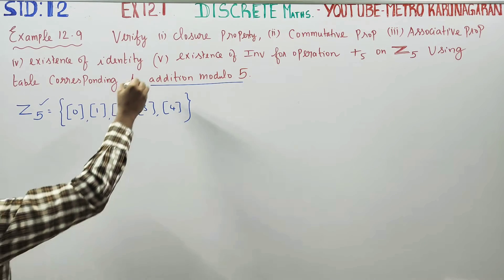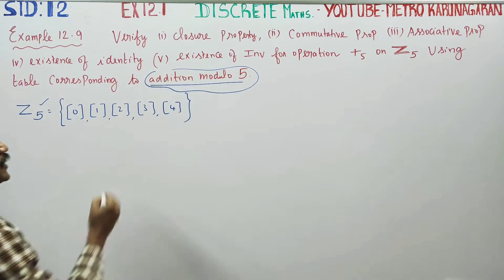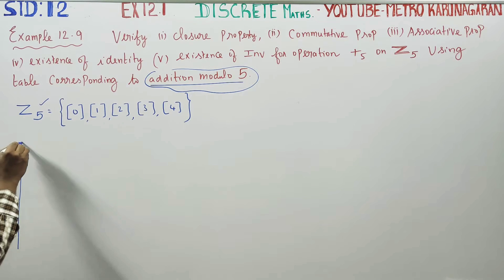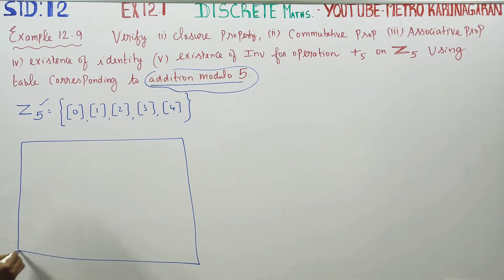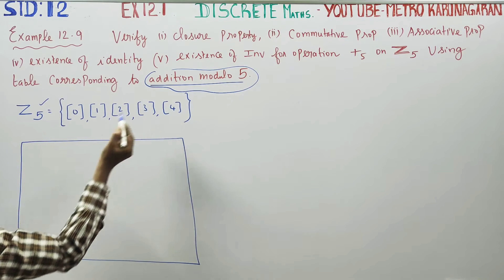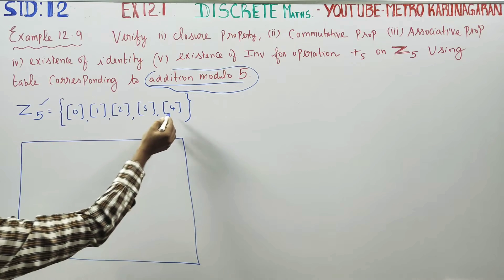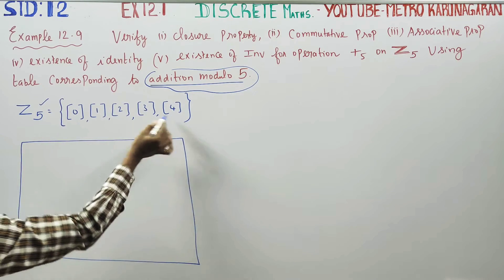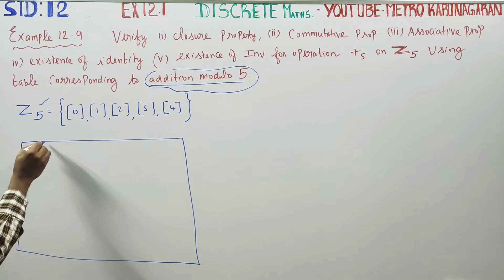In Z₅ elements, we use addition modulo to prepare a table. The meaning of addition modulo is: if you use Z₅, you use elements 0 through n−1. For Z₆ you use 0 through 5; for Z₈ you use 0 through 7.